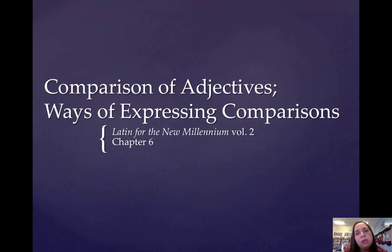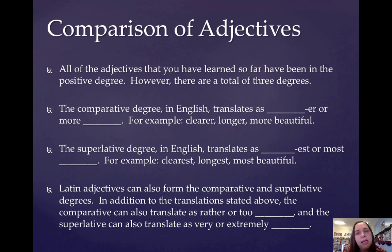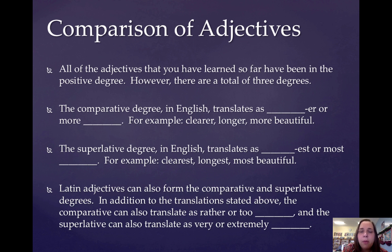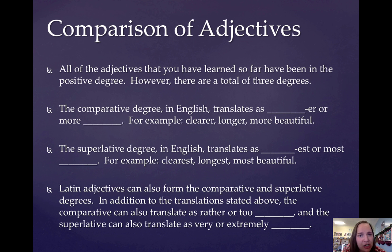We're also going to learn two ways of expressing comparisons. All of the adjectives that you guys have learned so far have been in what's called the positive degree. So brave, silly, happy, small — all of those are positive degree adjectives.